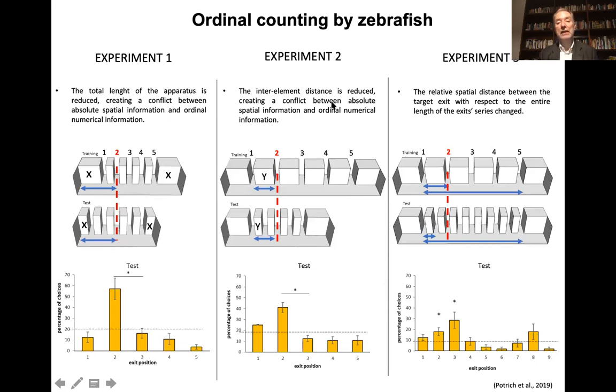Here similarly, the inter-element distance is reduced in such a way that the previously correct second door is now the third one. But you can see that again fish choose on the basis of number rather than distance. So we wondered whether maybe it is not absolute but some sort of proportion of distances which they are using.